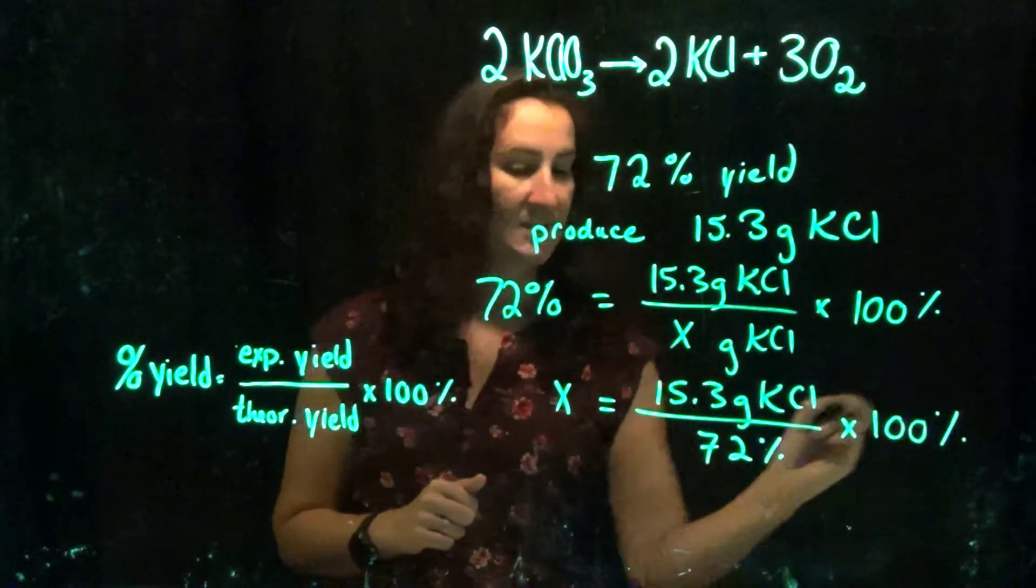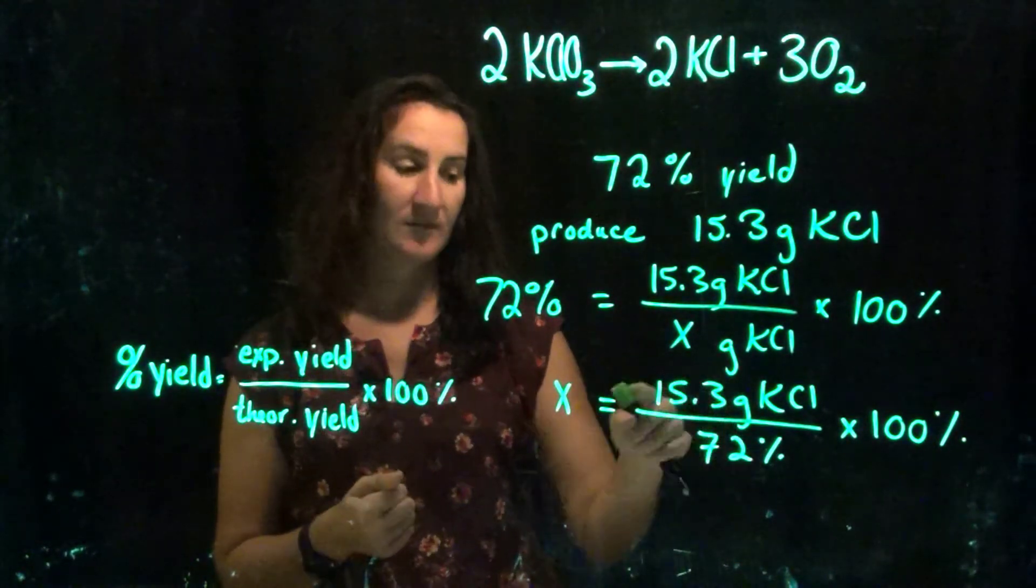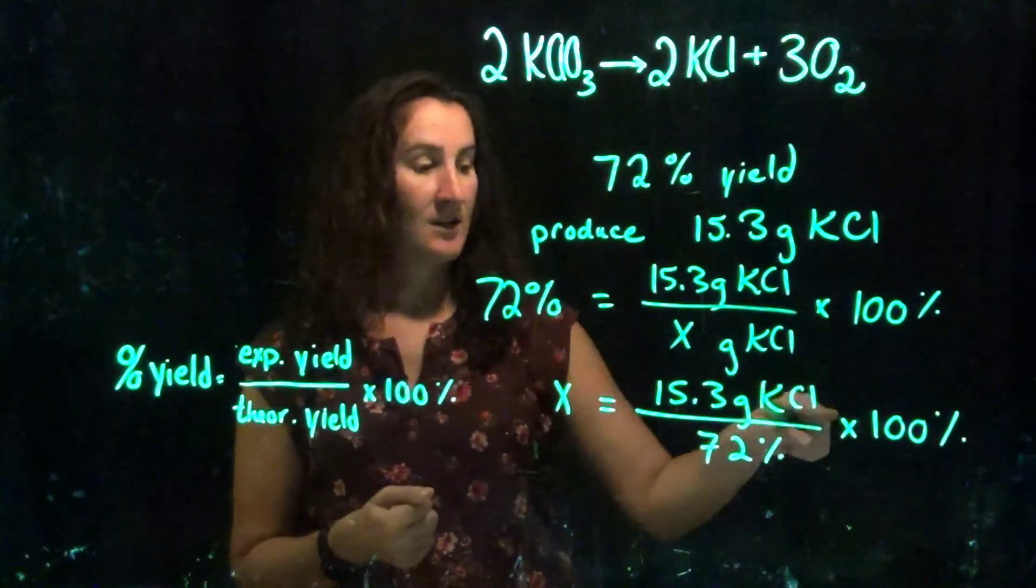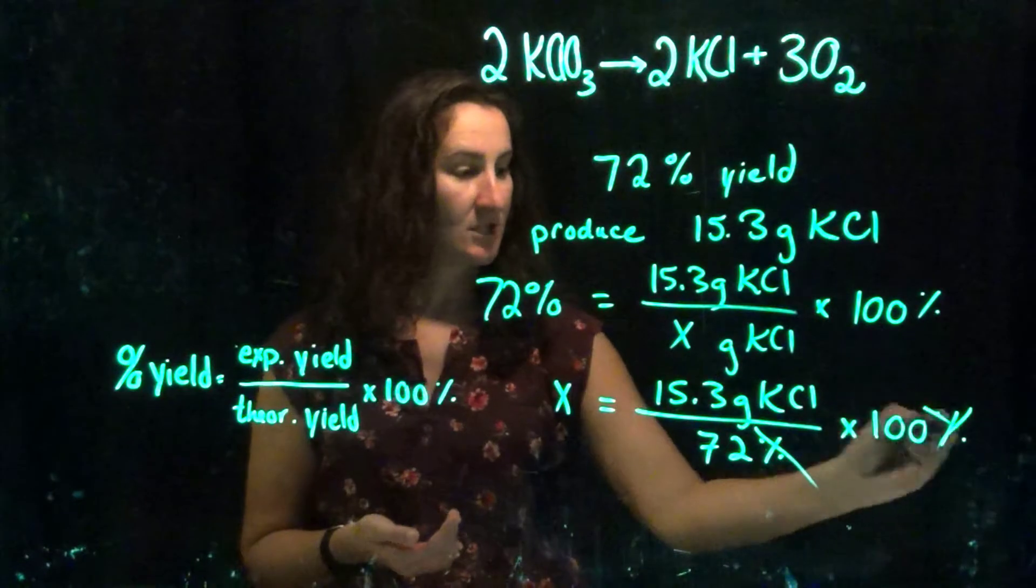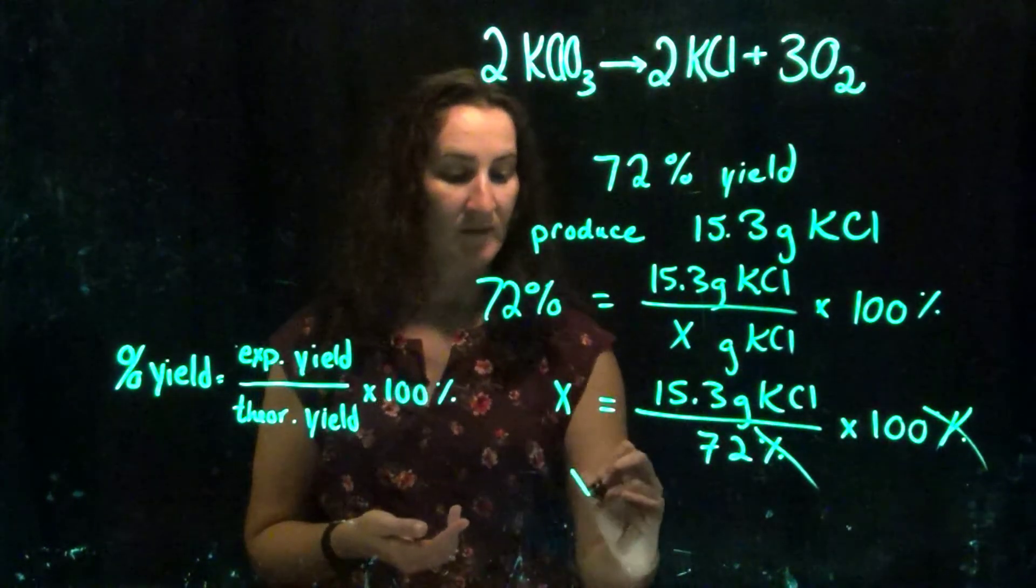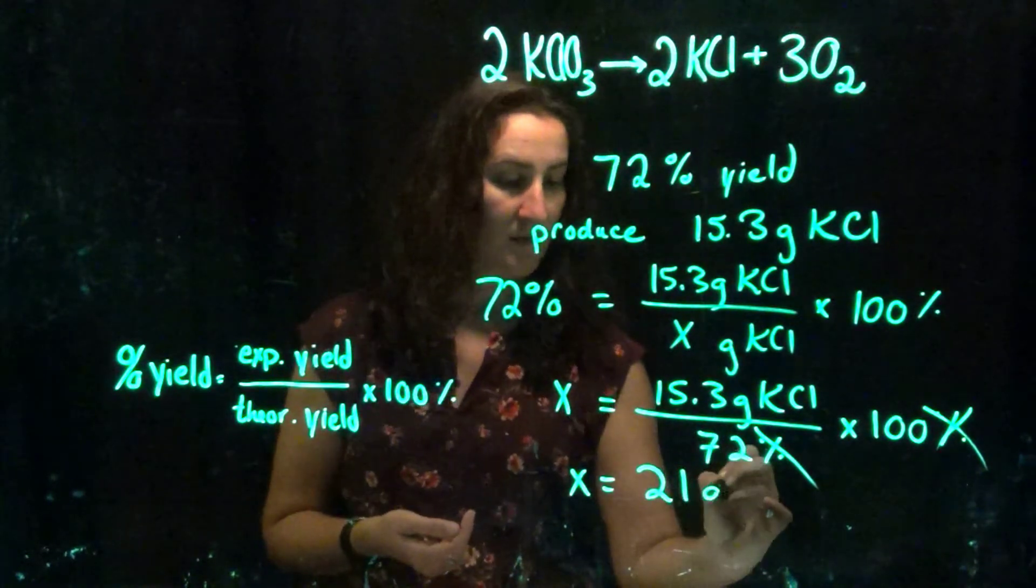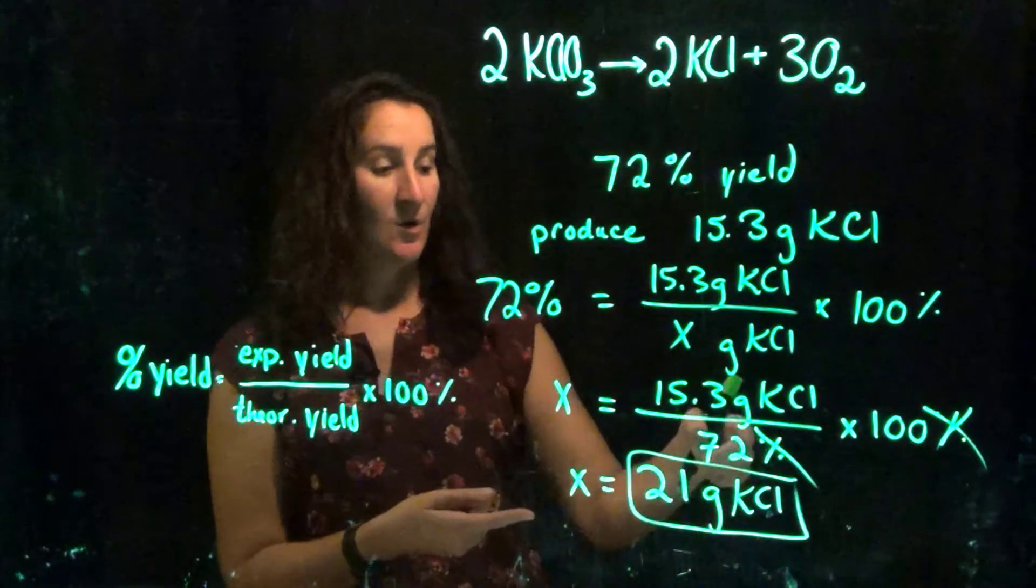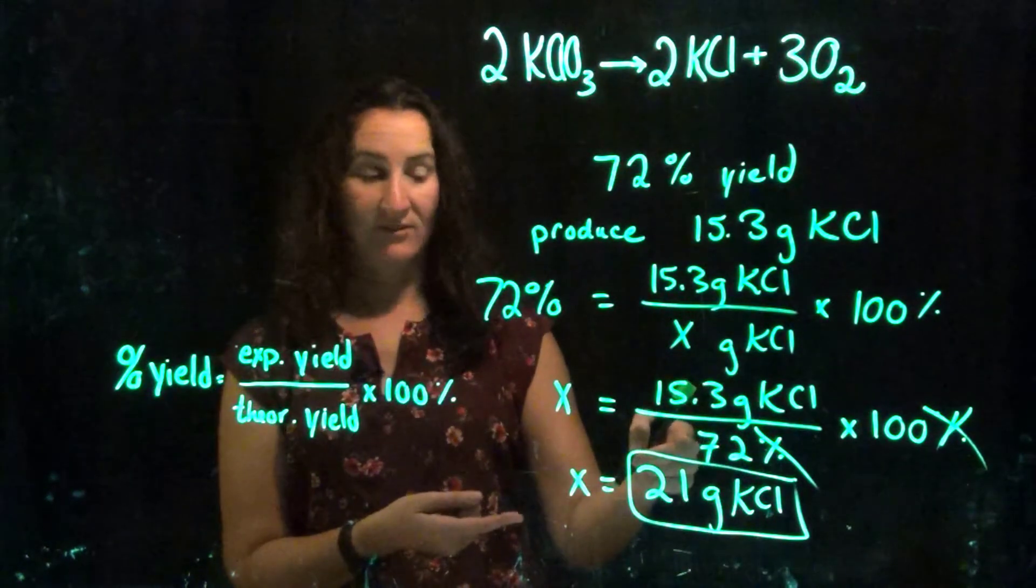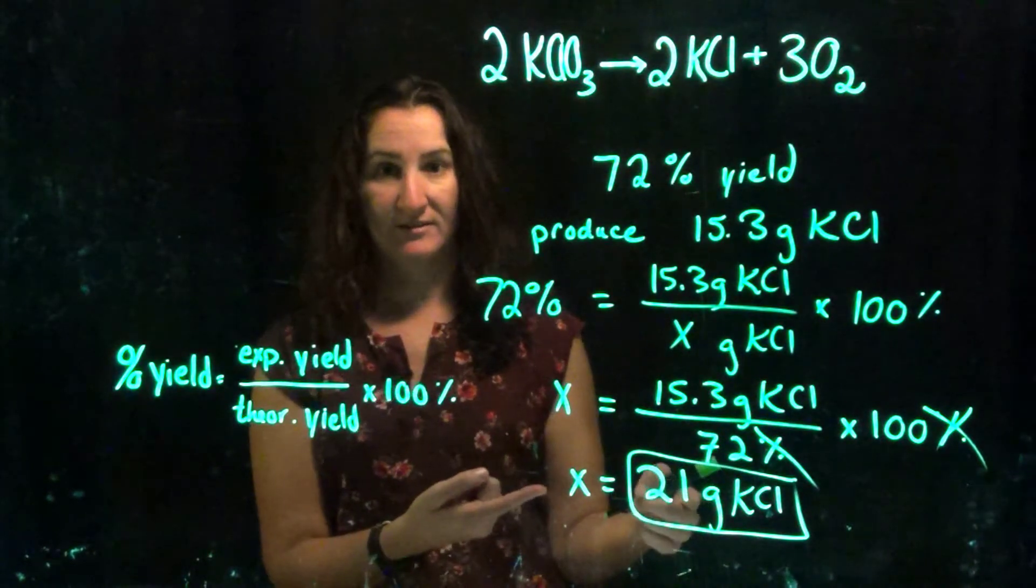So to solve for this problem, I move my X to the other side, and I'm going to move my percentage down. In this case, in my calculator, I would do 15.3 grams, so 15.3 divided by 72, enter, times 100, and your percentages are going to cancel with each other, and you're going to end up with grams. So my final answer is 21 grams of KCl. Notice my sig figs here, where there was 2 sig figs in 72, 3 sig figs in 15.3, so my final answer has 2 significant figures.